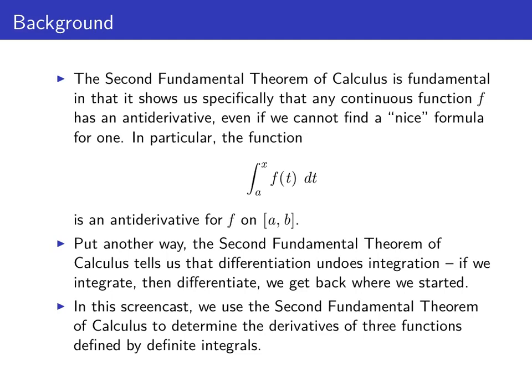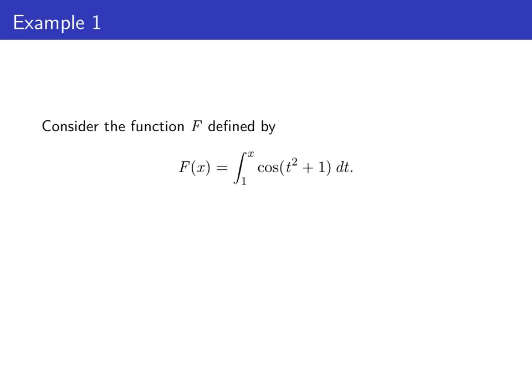In this screencast, we're going to use the second fundamental theorem of calculus, along with other properties of integrals and properties of the derivative, in order to calculate derivatives of three specific functions defined by definite integrals. For our first example, consider the function capital F, defined as the definite integral from 1 to x of cosine of t squared plus 1 dt.